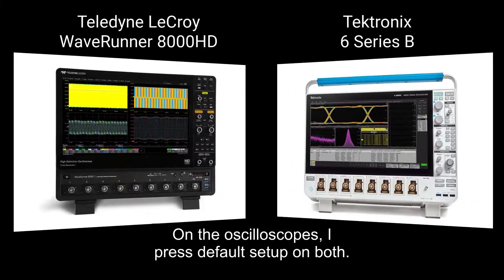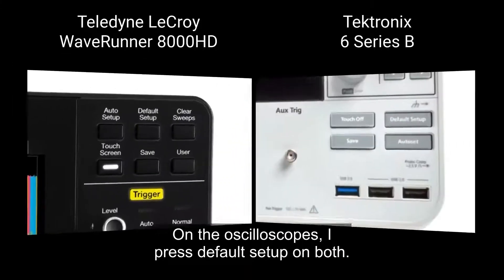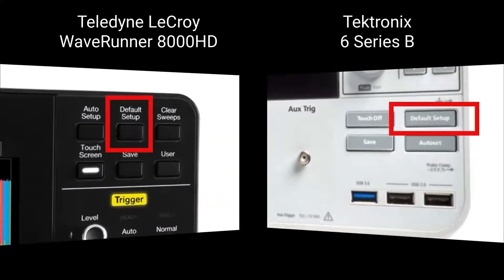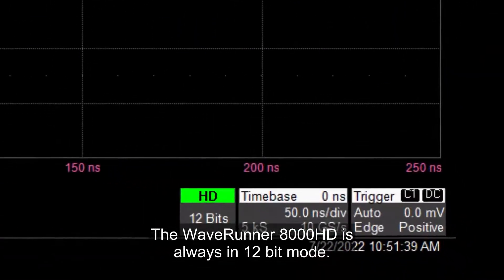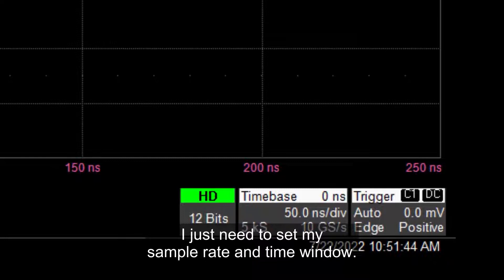On the oscilloscopes, I press default setup on both. The Waverunner 8000 HD is always in 12-bit mode. I just need to set my sample rate and time window.